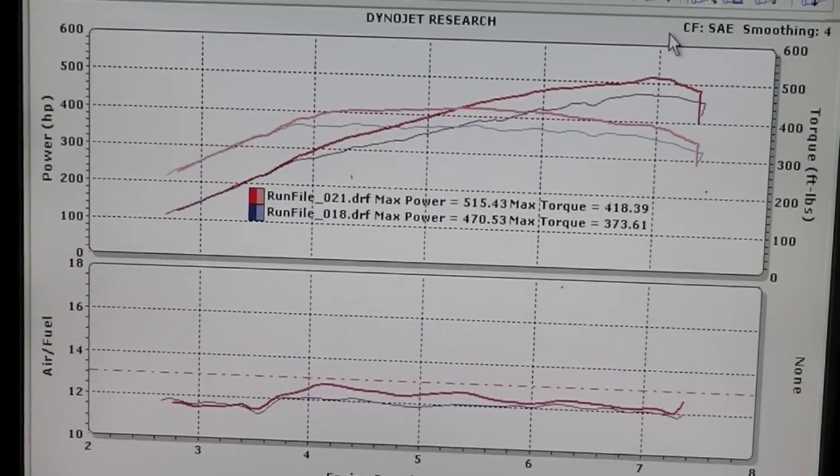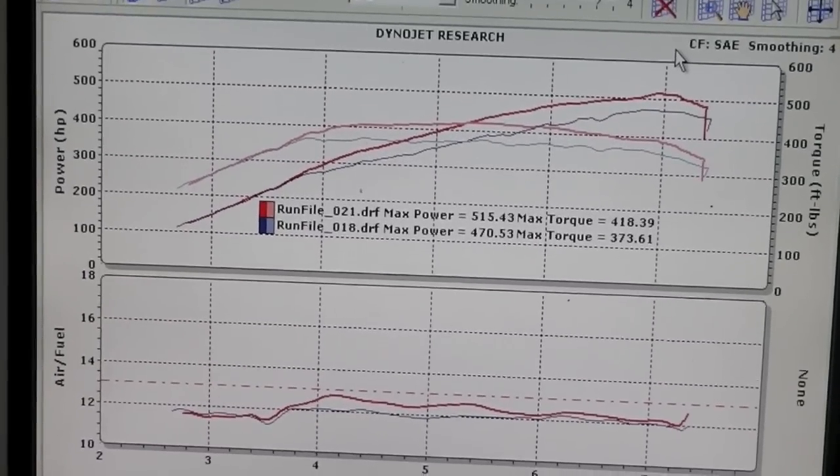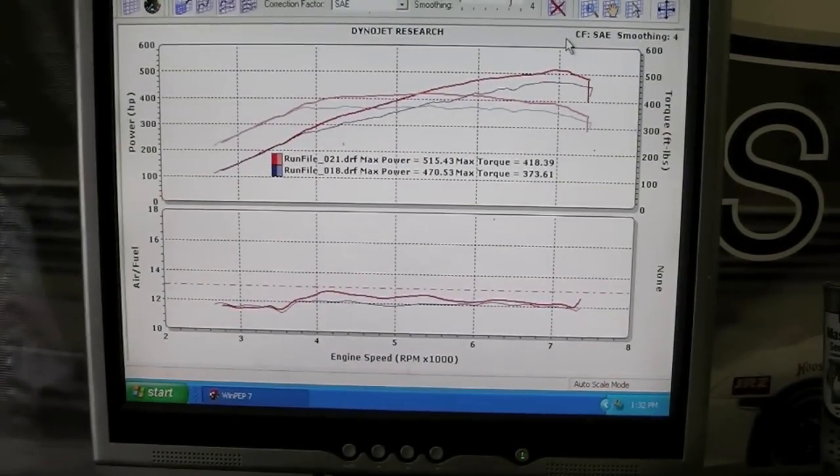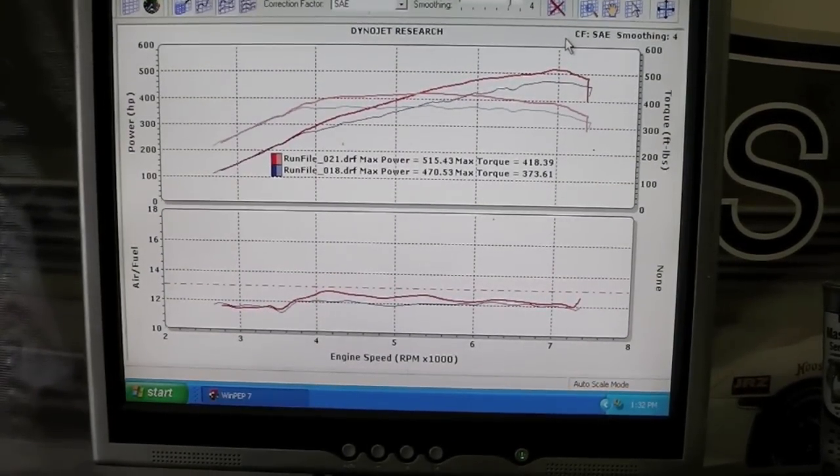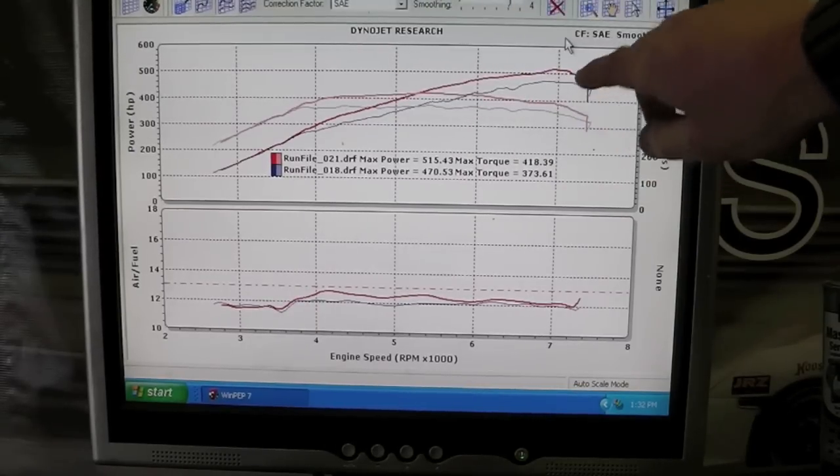It's almost running the timing map of a normally aspirated car which makes a lot of sense because the car has an incredible turbine section on it with great turbine flow and it's pulling about one pressure ratio between the exhaust and the intake. You can really see it here in the horsepower and torque.